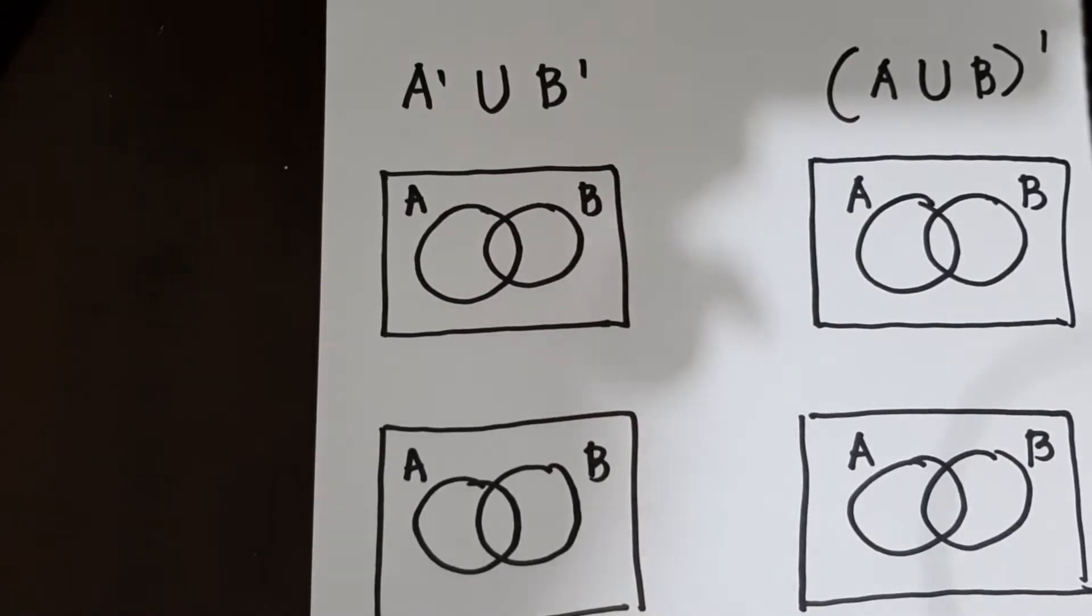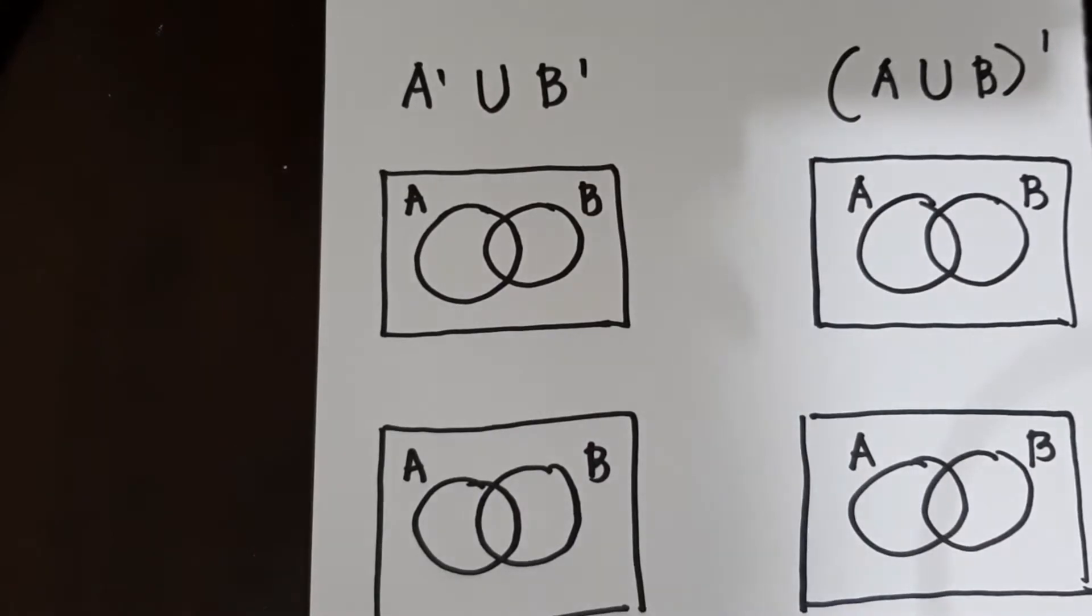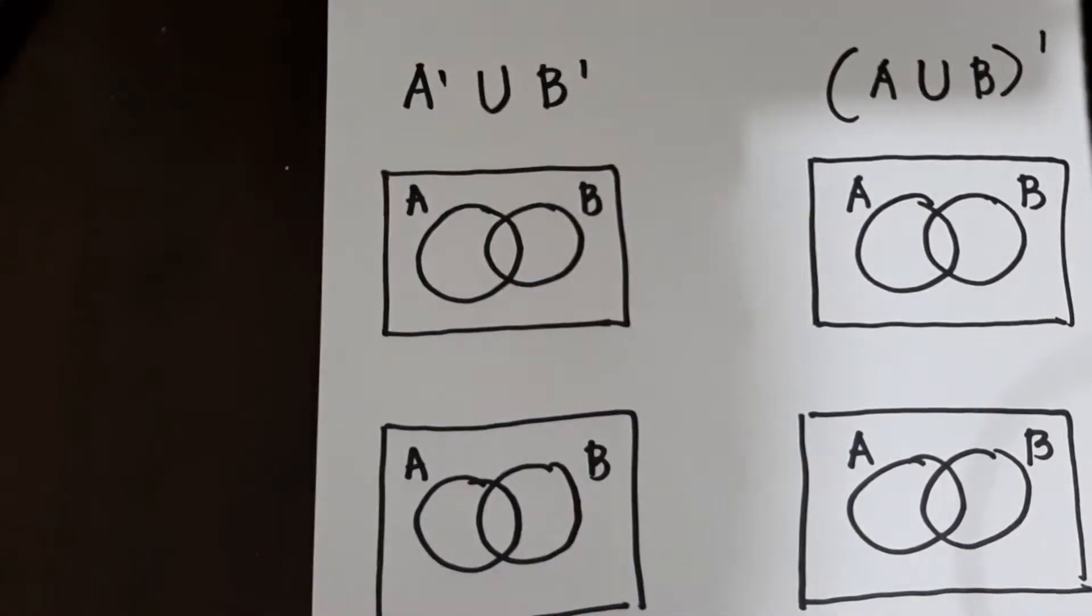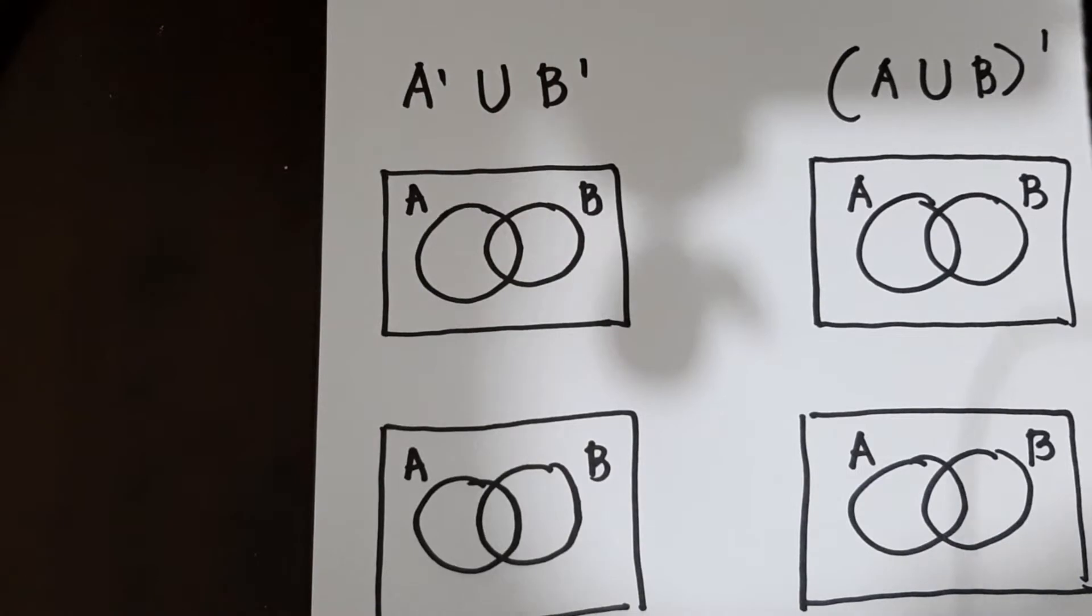Itong number 1. So we have here, not A union not B. So ibig sabihin, kukunin natin yung union ng not A at ng not B. So ang technique lang dito is to solve one by one, step by step.